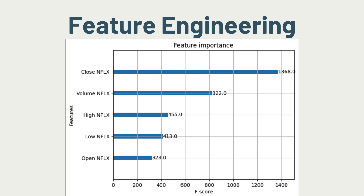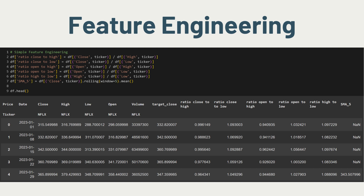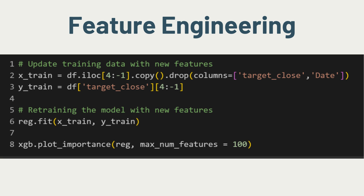As an example, we will do some simple feature engineering. Since the closing price is the most important feature, we will try to create some features based on it. You will have to experiment with different features and assess the model performance subsequently. For now we will create features based on different ratios of closing and opening prices to high and low prices, and the ratio of high to low price. We will also add in a simple moving average of five periods.